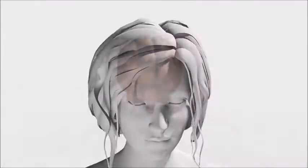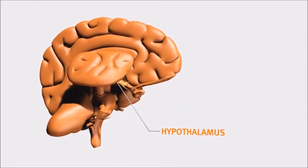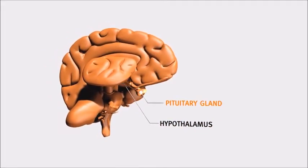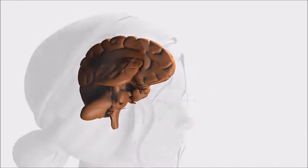The natural processes in the ovaries and the womb are controlled by hormones. Gonadotropin-releasing hormone is secreted from the hypothalamus in the brain and stimulates the production of luteinizing hormone and follicle-stimulating hormone by the pituitary gland in the brain.